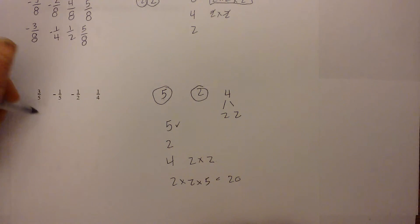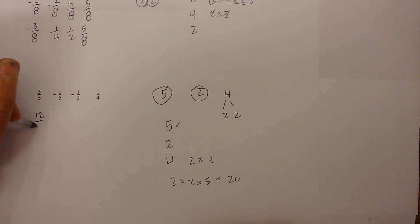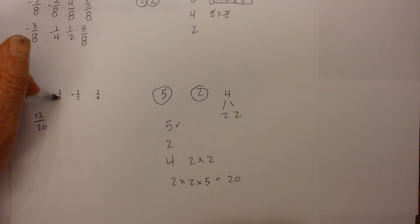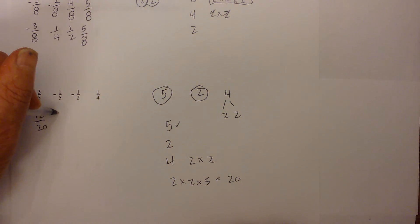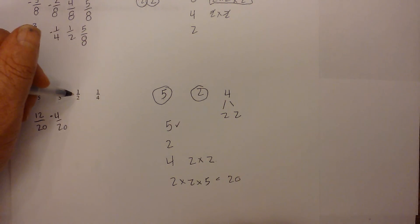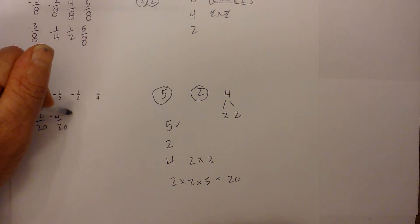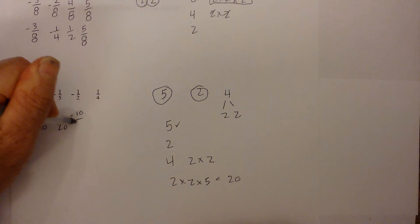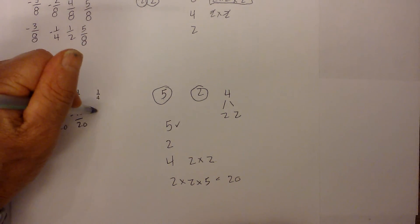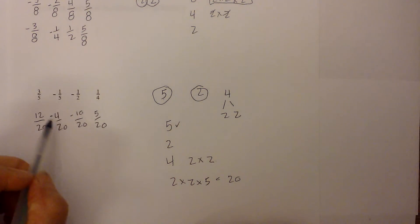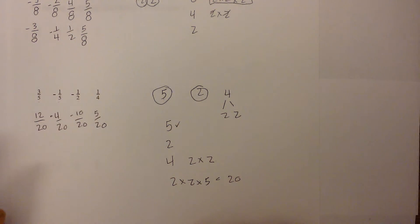Five goes into twenty four times, and four times three is twelve — so we have twelve twentieths. Negative one fifth: five goes into twenty four times, four times one is four — so we have negative four twentieths. Two goes into twenty ten times — giving us negative ten twentieths. Four goes into twenty five times — giving us five twentieths.